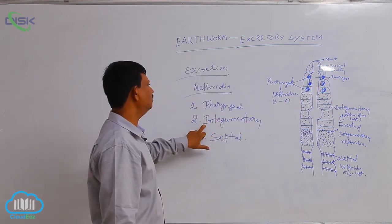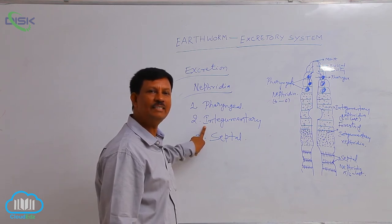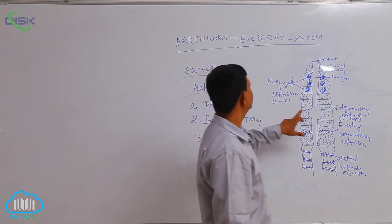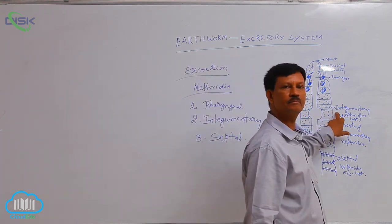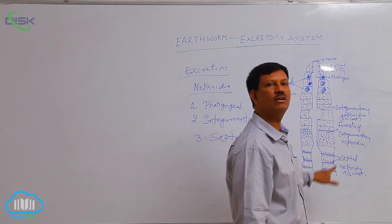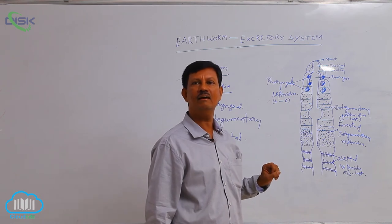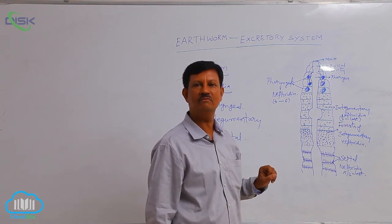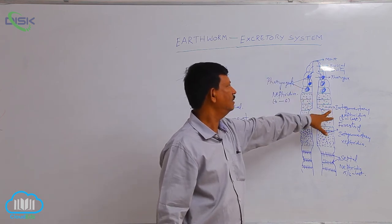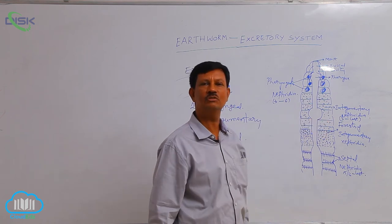Second, integumentary nephridia. These are the nephridia attached to the integument of the body, hence they are known as integumentary nephridia. These nephridia start from the third segment to the last segment. In the first two segments, integumentary nephridia are absent. They are attached to the integument.